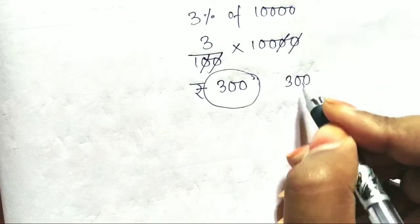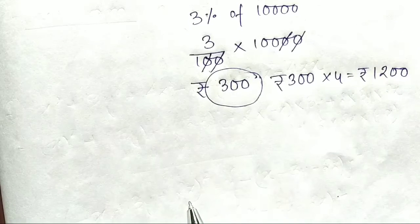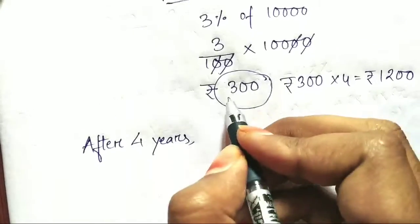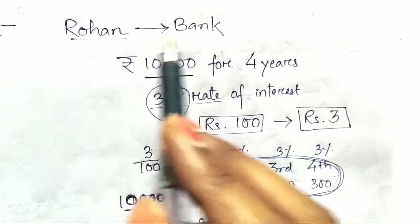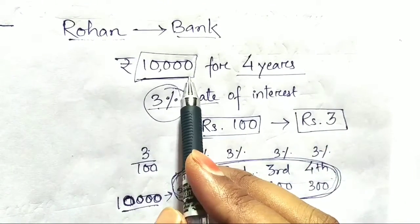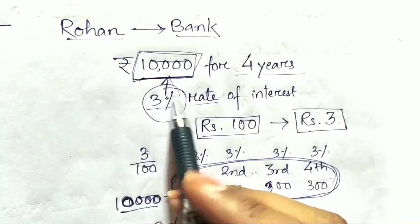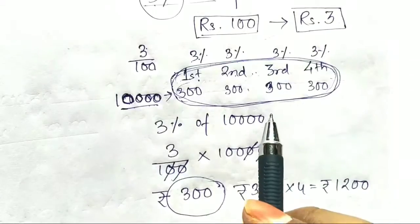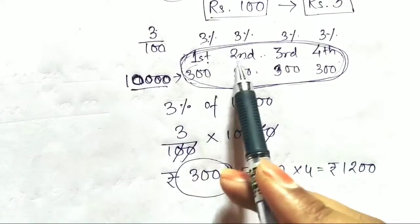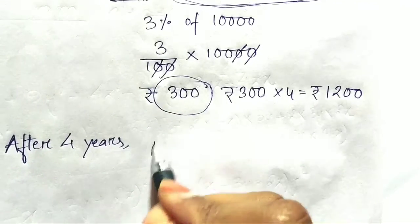After 4 years, the bank deposited 10,000 rupees at 3% interest. The central profit is about 3% interest. If the bank gives 3% on 10,000 rupees, that comes to 300 per year. The total over 4 years is 1,200. So, total amount is 11,200.